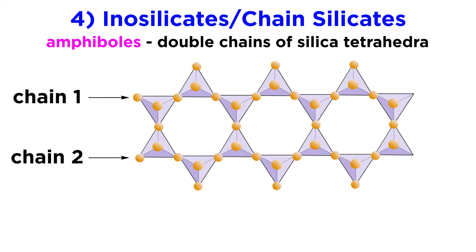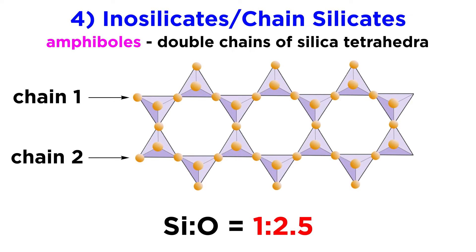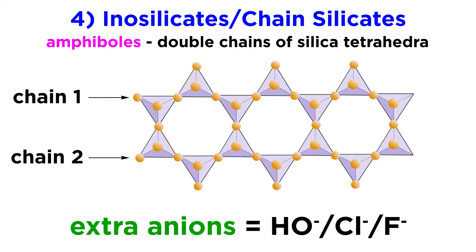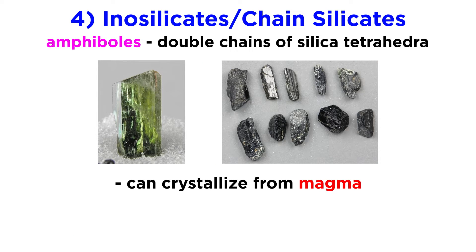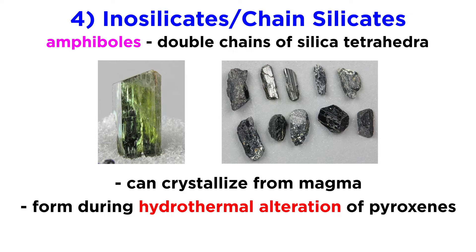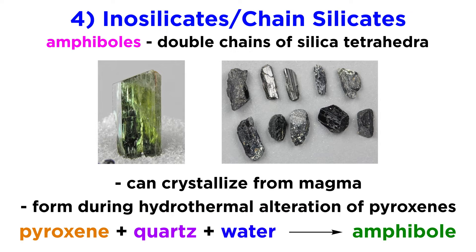Double-chain silicates, better known as amphiboles, combine two single chains of tetrahedra by having every other silica tetrahedron share three of its oxygen atoms with the adjacent tetrahedron, forming a ring-like structure. They have a silicon to oxygen ratio of 1 to 2.5, and always have extra anions, typically volatiles like hydroxyl, chlorine, and fluorine. Amphiboles can crystallize from a magma, but they usually form during the hydrothermal alteration of pyroxenes, via the reaction: pyroxene plus quartz plus water yields amphibole.